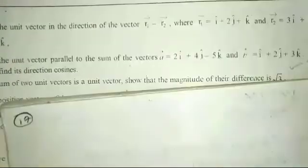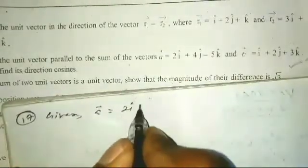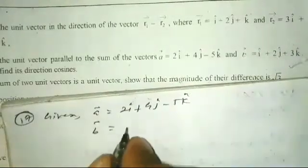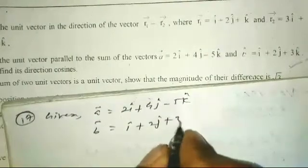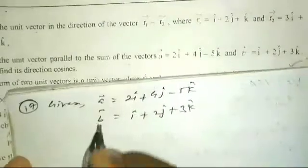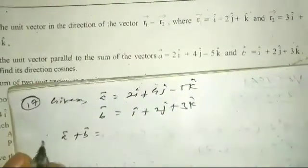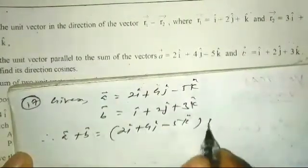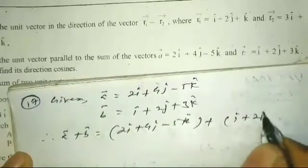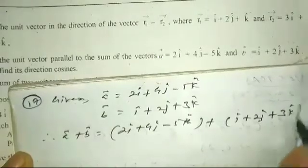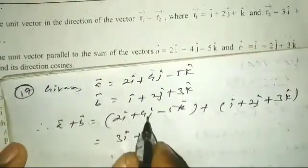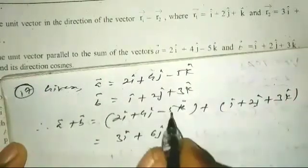Question number 17: vector a equals 2i-cap plus 4j-cap minus 5k-cap and vector b equals i-cap plus 2j-cap plus 3k-cap. Therefore a plus b equals (2+1)i-cap plus (4+2)j-cap plus (-5+3)k-cap, which is 3i-cap plus 6j-cap minus 2k-cap.